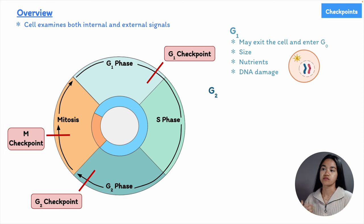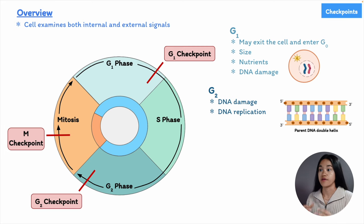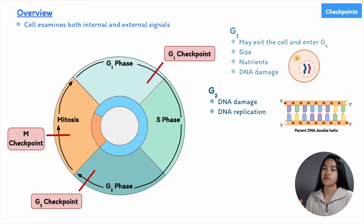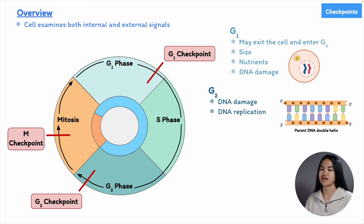Moving on to the G2 checkpoint, the cell will check for any DNA damage and whether the DNA has been successfully replicated. The cell will stop at the G2 checkpoint to allow for repairs if errors or damage are found. If there are any issues, the cell will try to repair the damage. However, if the damage is irreparable, the cell may go through apoptosis — programmed cell death — because the cell doesn't want to pass damaged DNA onto daughter cells.